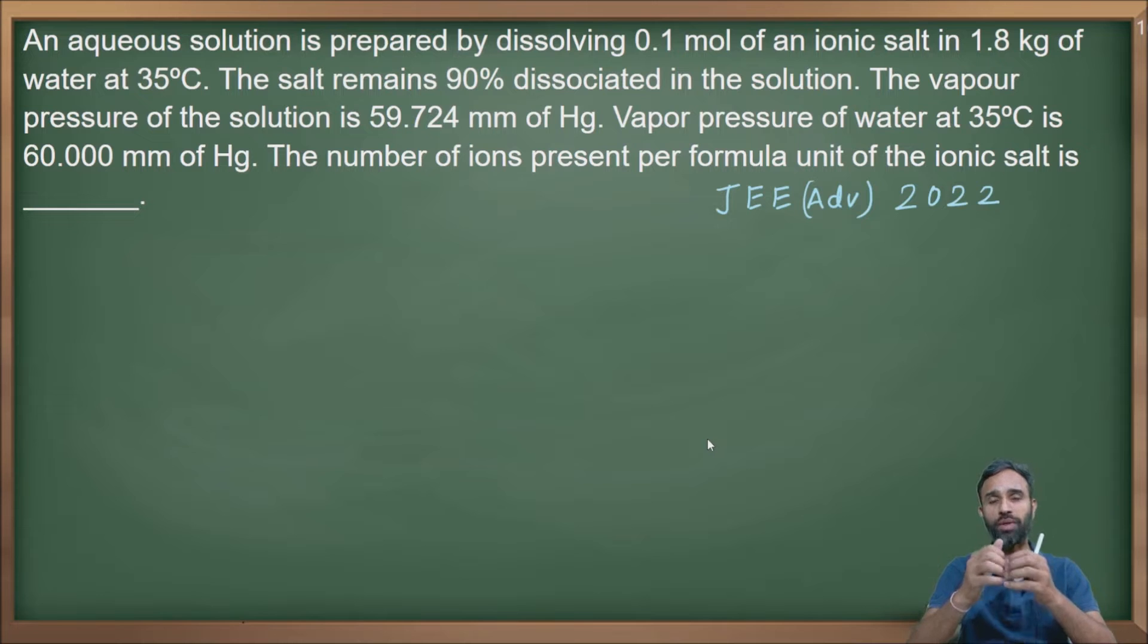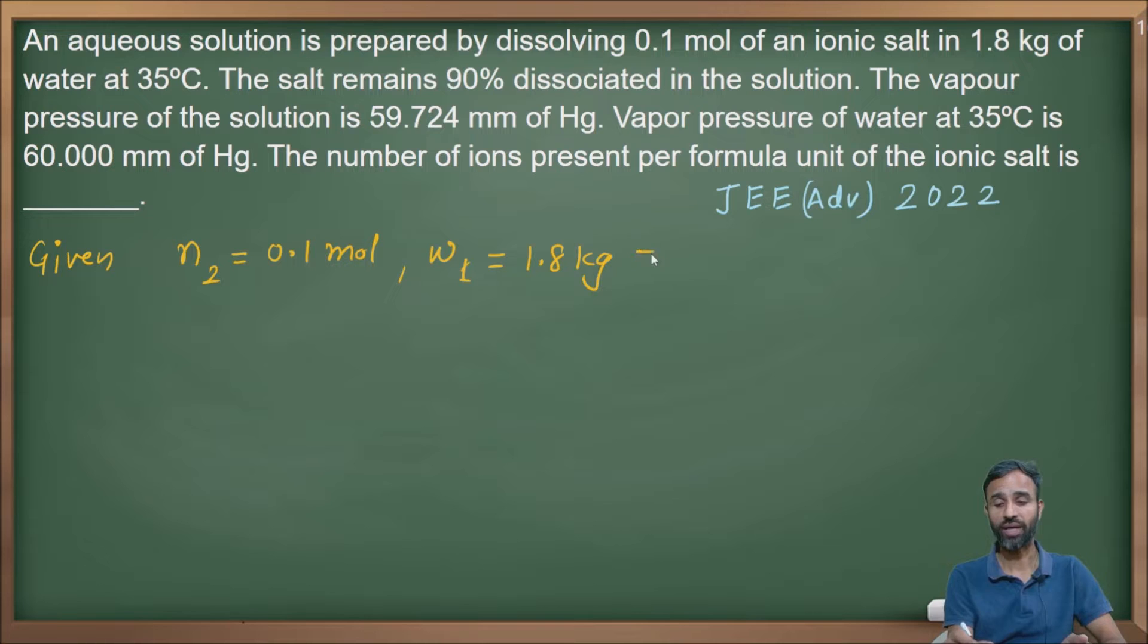I have started with the chapter solution. The question is: an aqueous solution is prepared by dissolving 0.1 mole of an ionic salt (n₂ = 0.1 mole) in 1.8 kg of water, that is 1800 grams, at 35°C.